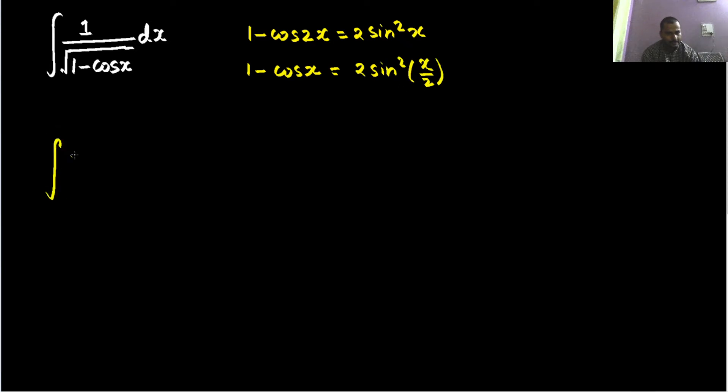So let us replace this. This is 1 divided by under the root 2 sine square x by 2 and dx. Now this 2 can be taken out and this will go out as 1 by root 2 and inside I am left with 1 divided by under root sine square x by 2.